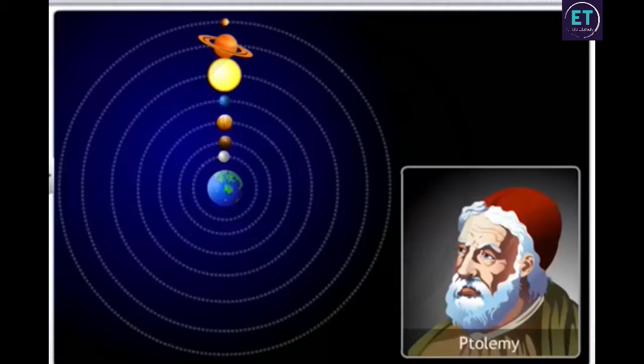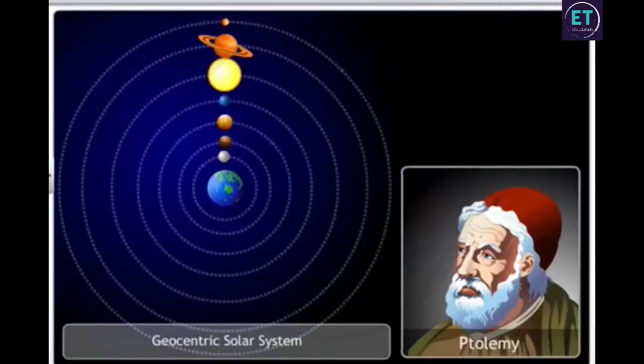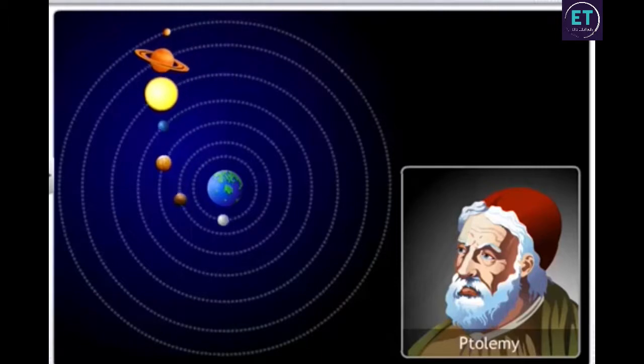Ptolemy showed the world a geocentric solar system which was centered on the earth, with the moon, the sun, and five planets revolving around the earth in perfect circular orbits.